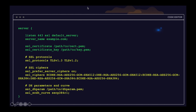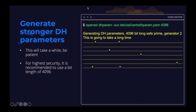To generate a stronger DH parameters file, use the OpenSSL command: openssl dhparam, then -out to specify where to save the file, and specify the bit length. For highest security, it's recommended to use a bit length of 4096. This will take a while — I ran it earlier and it took about 3 to 4 minutes on a 2-core, 8-gigabyte server, so be patient. After making these changes, we were able to achieve an overall SSL Labs rating of A — but we can do better.